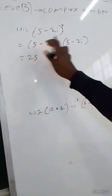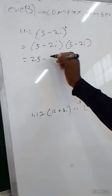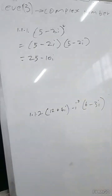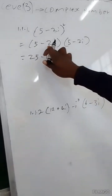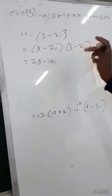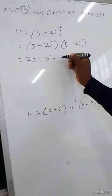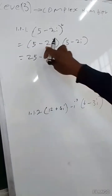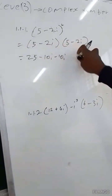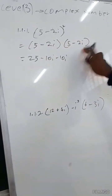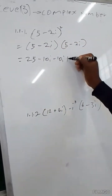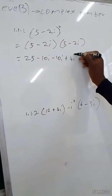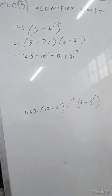Then 5 times negative 2i, which is negative 10i. Then negative 2i times 5, which is negative 10i. Then negative 2i times negative 2i, which is positive 4i squared.